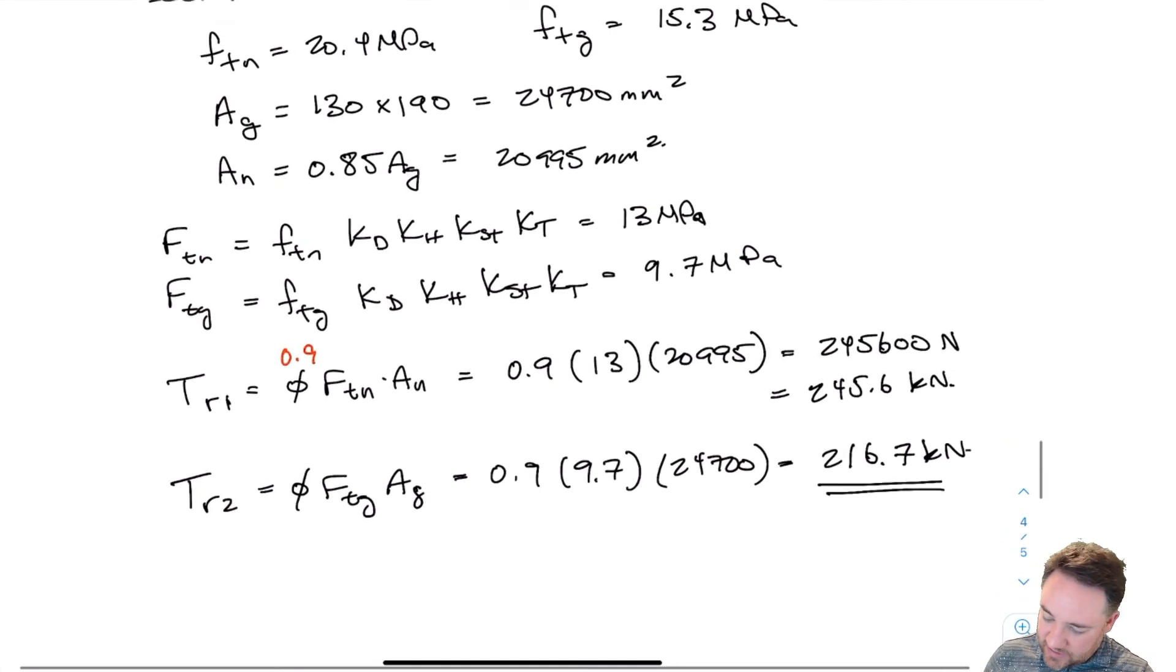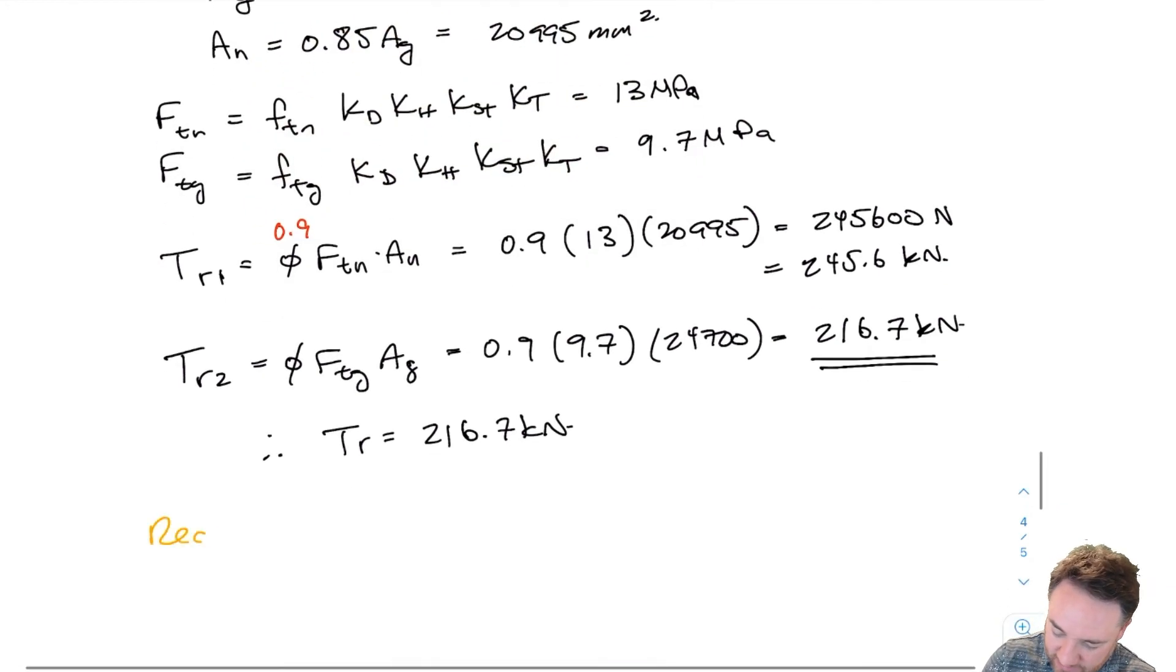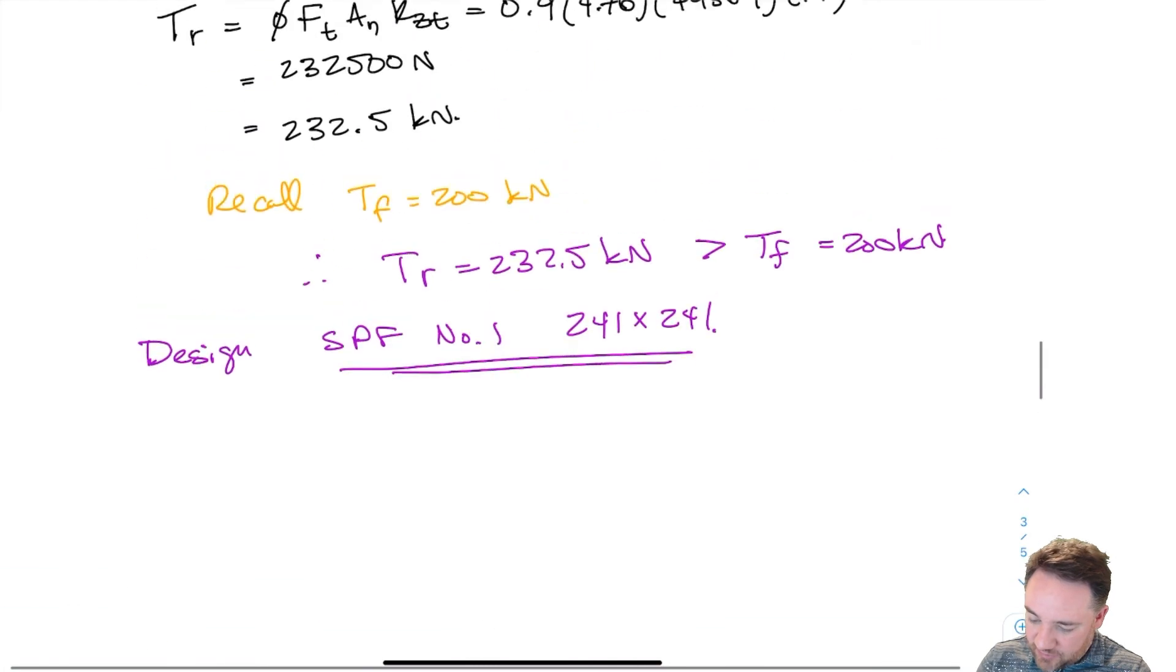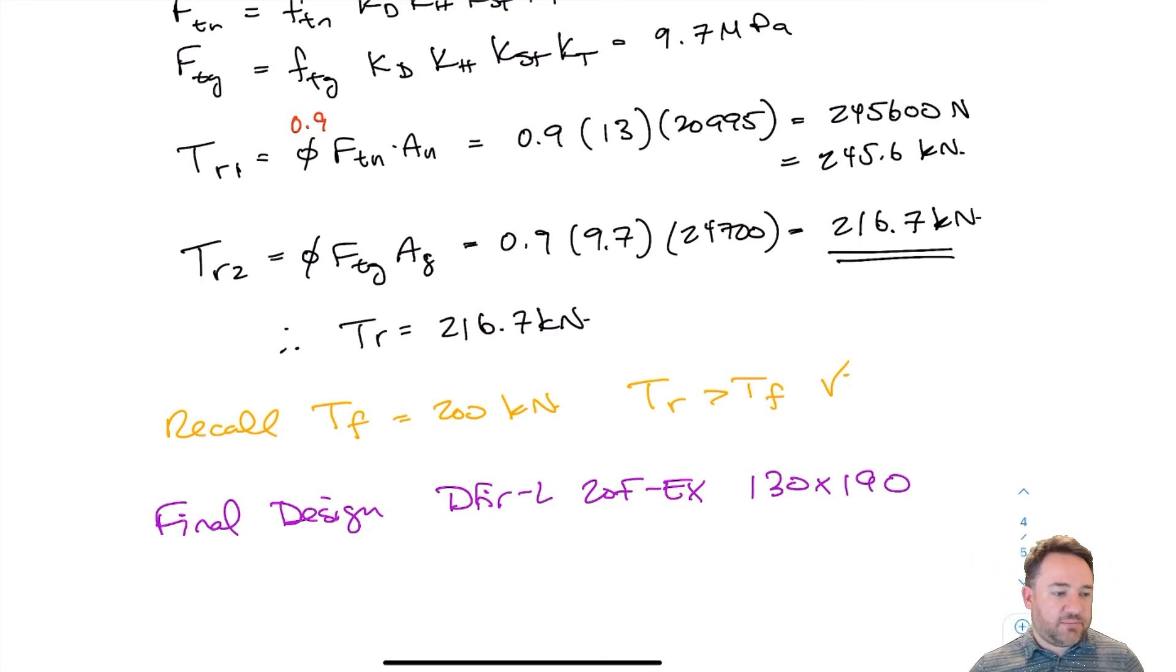Therefore, TR is 216.7 kilonewtons. Recall that my TF is 200 kilonewtons, and therefore TR is greater than or equal to TF, so I'm good to go. My design is a Douglas Fir Larch 20F EX grade 130 by 190. Now I've gone through the entire design process starting at load calculations, picking a section out of the table, and then coming up with a final check on my strength and my final design. Of course, there's nothing really to draw here because it's just one member, but if I had connections or multiple members, now I can put these in my drawings.